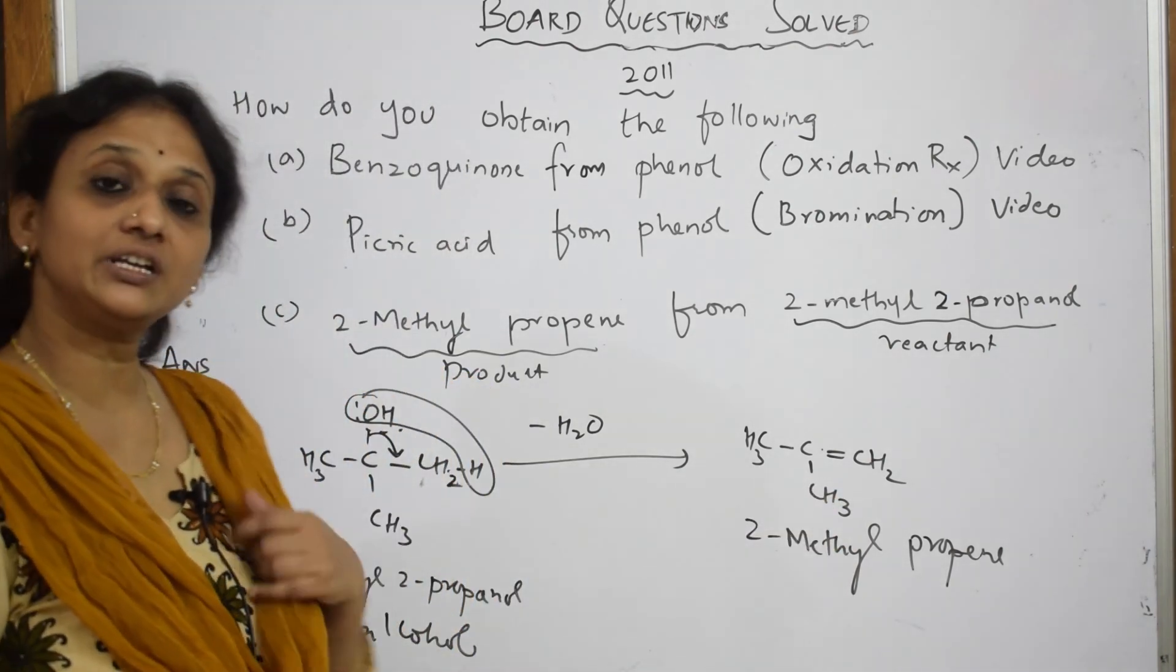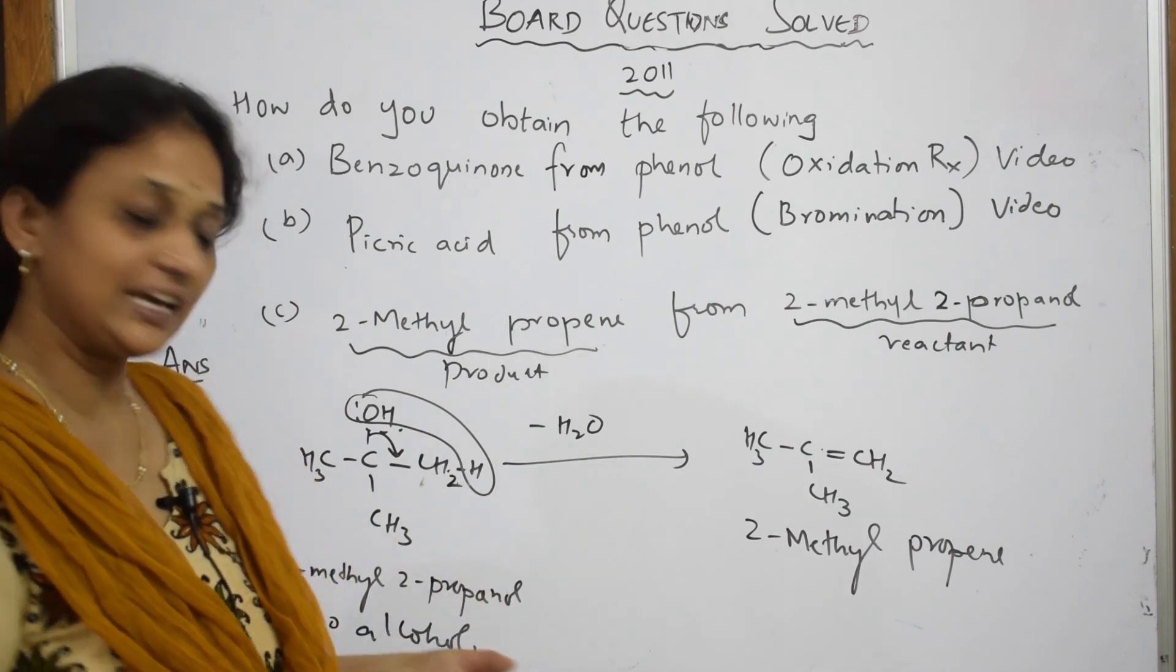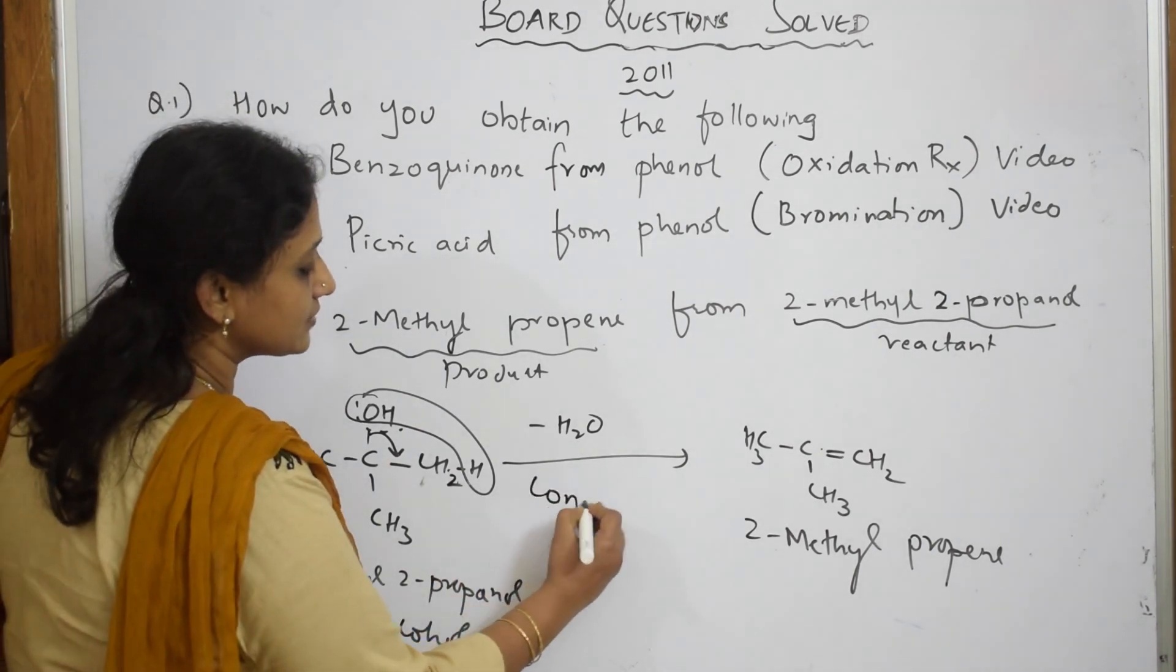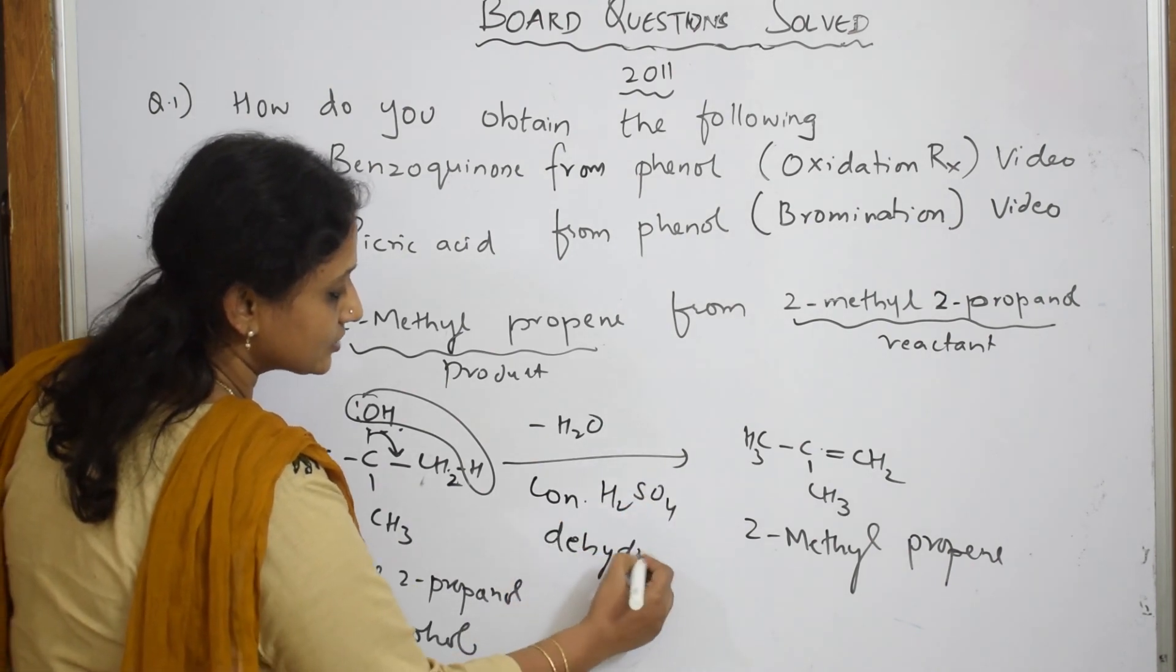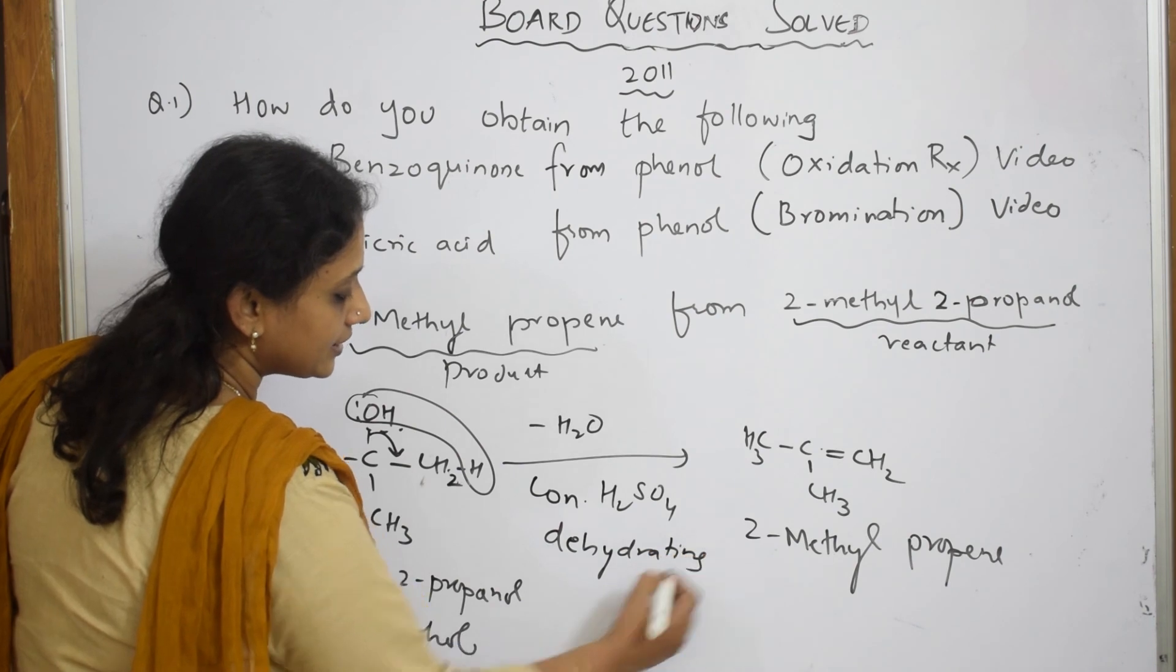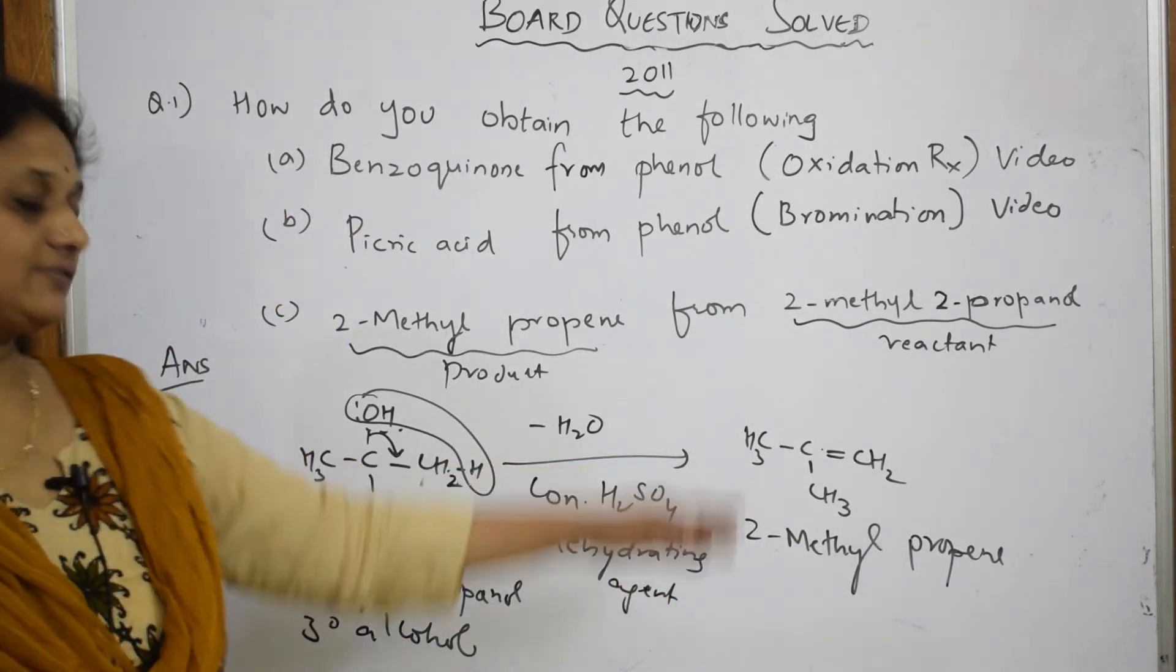So what should we use for dehydration? I have to use a dehydrating agent, that is your concentrated sulfuric acid. So concentrated sulfuric acid is acting as a dehydrating agent. It's going to remove water from tertiary alcohol and give us alkene.